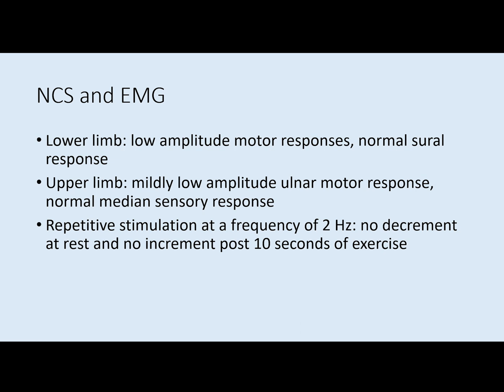On his nerve conduction studies, he had low amplitude CMAPs in the lower limb with a normal sural sensory response, and in the upper limb his ulnar motor CMAP was a little bit low with a normal median sensory response. Repetitive stimulation at a frequency of 2 Hz was done on the ulnar motor and there was no decrement at rest and no increment seen after 10 seconds of exercise.